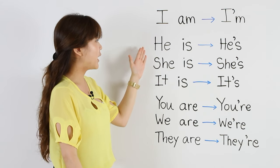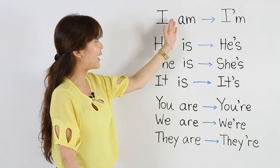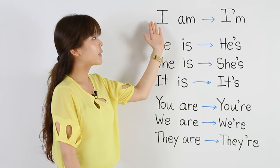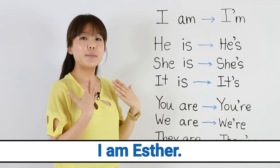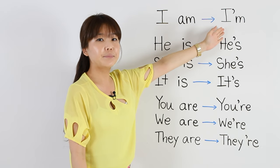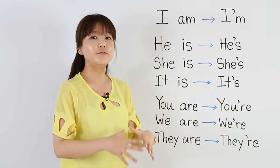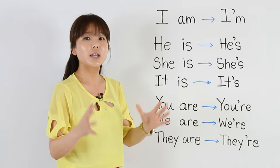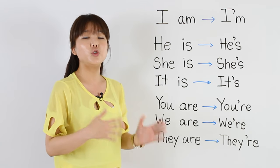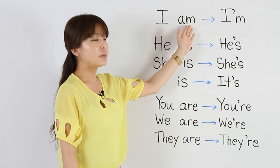Okay, first we have the subjective pronouns, and we have the be verbs: am, is, and are. So let's look at the first one — I am. I am Esther. The contraction for I am is I'm. A contraction is a more common way of saying subjective pronouns and their be verb. It's faster, quicker, and shorter — it's more common. I want you to use contractions. So I am becomes I'm.